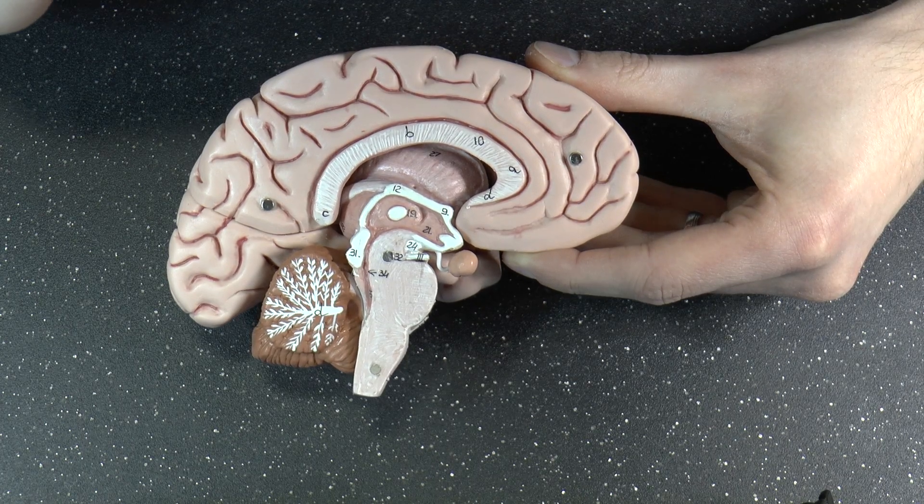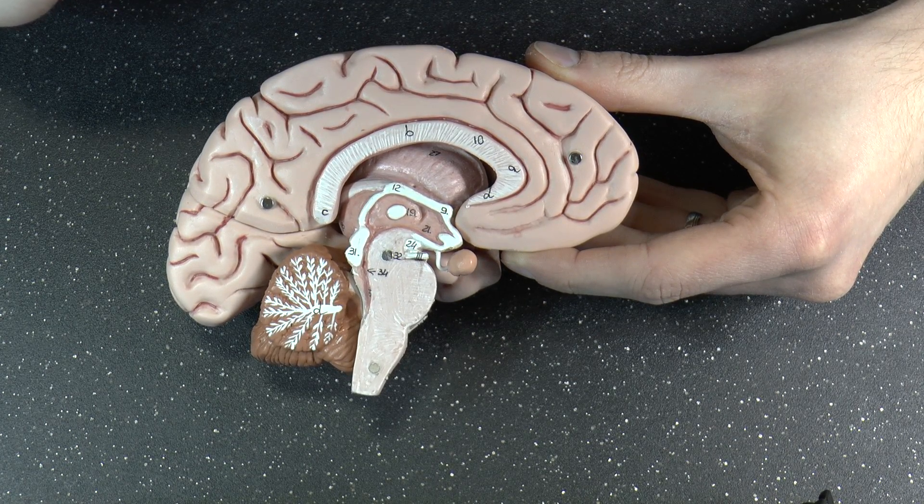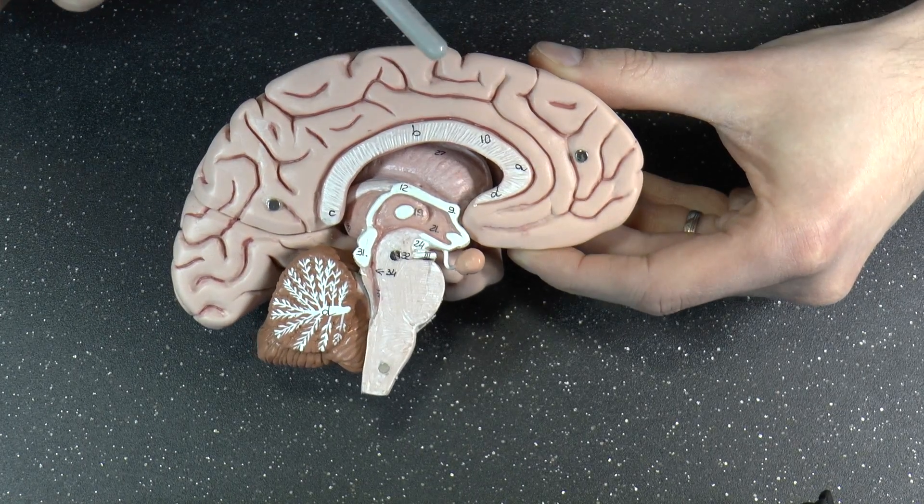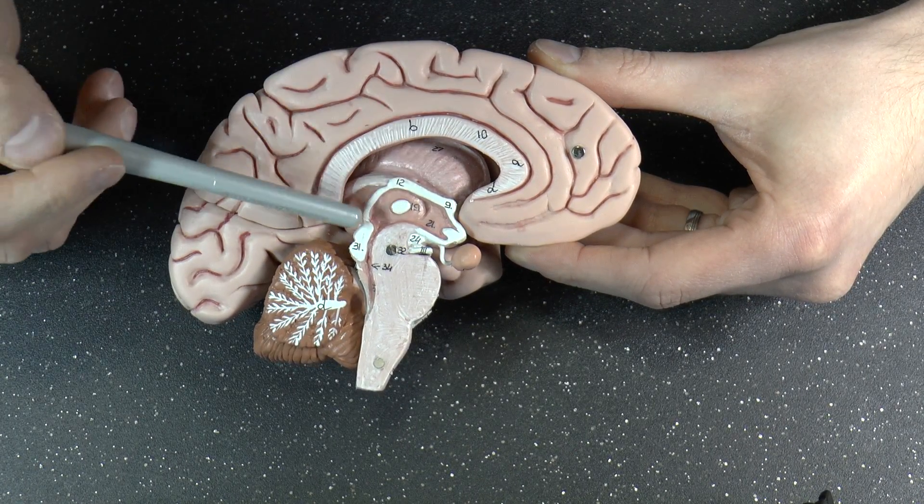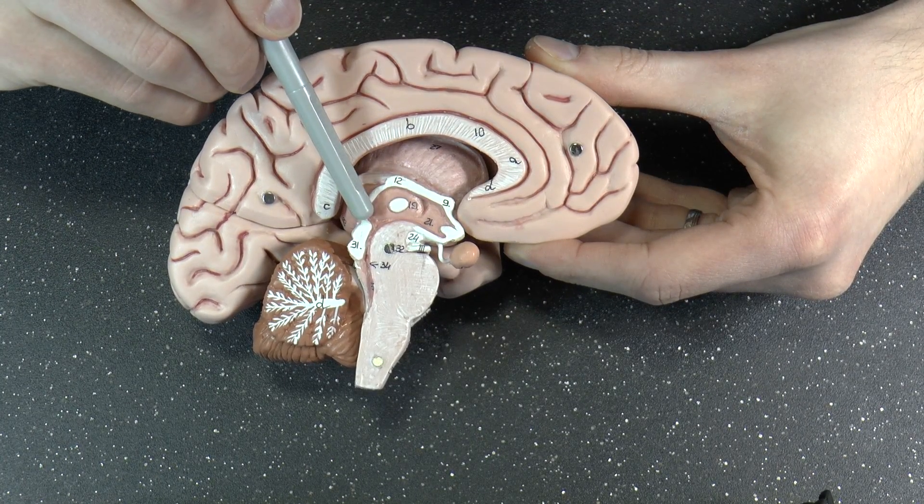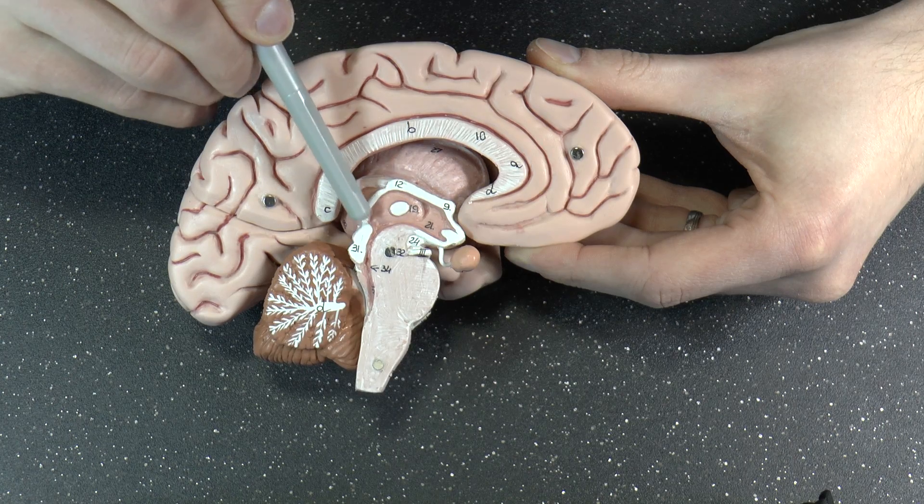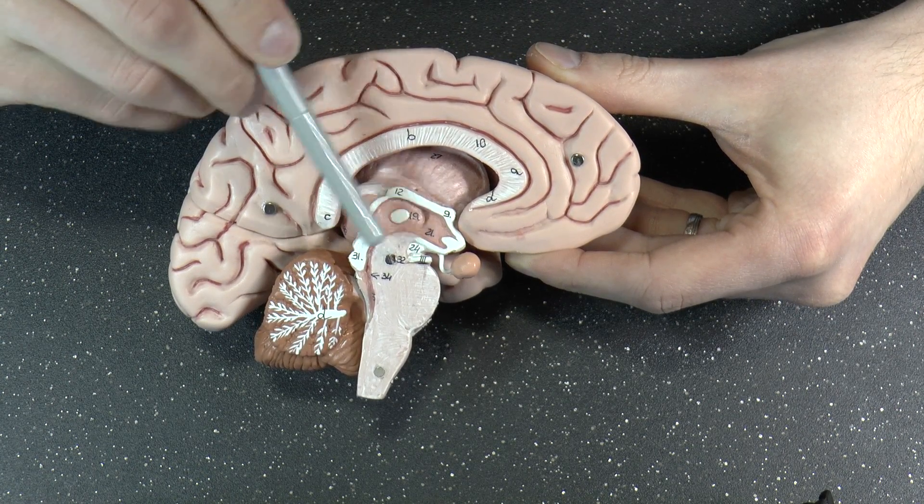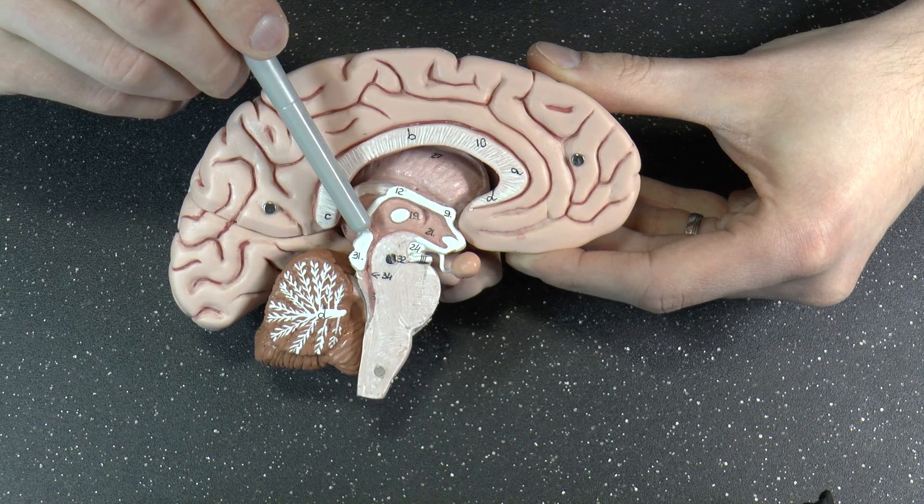Then there is a posterior commissure. And the posterior commissure is not really clearly defined on this particular model. But provided this is the superior colliculi, inferior colliculi, that's going to be my educated guess. About there. About at that height. That's the posterior commissure. One in the front, anterior. One in the back, posterior.